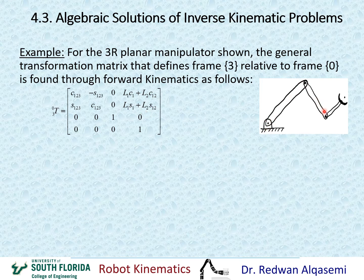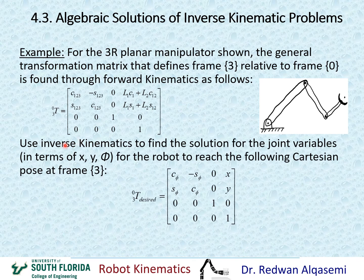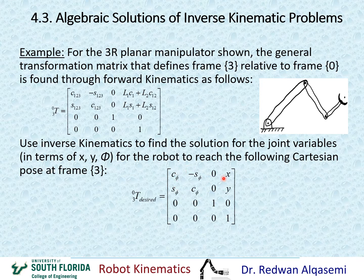This is the robot. We're not going to talk about forward kinematics covered in chapter 3 — we're going straight to chapter 4 and inverse kinematics. The desired transformation matrix is given in terms of X, Y, and rotation about Z by the amount of phi.